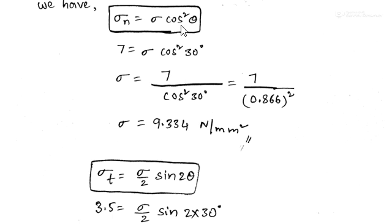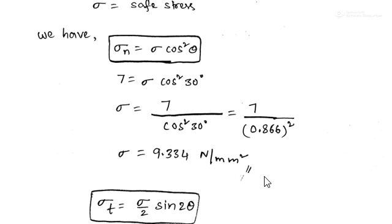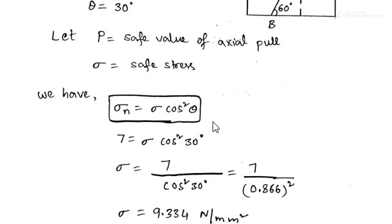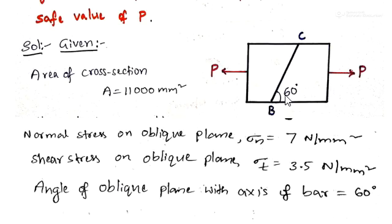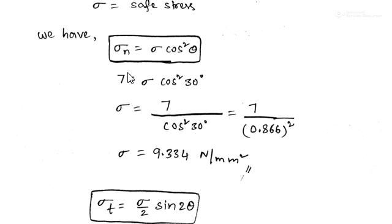For the derivation of these formulas, refer to the previous video. Considering normal stress on the oblique plane: the formula is σn = σ·cos²θ. Here σn = 7 N/mm² (given) and θ = 30°. Rearranging: σ = 7 / cos²(30°) = 7 / (0.866)². Simplifying, we get σ = 9.334 N/mm².